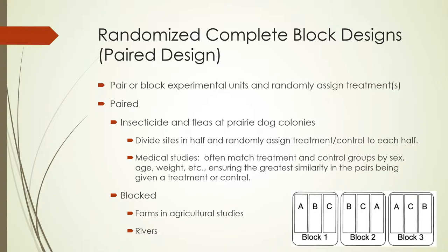The randomized complete block design really started in agricultural studies, where there was a lot of variation in soil fertility from farm to farm. If testing wheat varieties A, B, and C, you wouldn't want to grow them all at different farms due to soil variation. Instead, you go to one farm and plant all three varieties there, then another farm and do the same. You randomly assign treatments on each farm, comparing growth between treatments at the same farm to control for the farm effect.